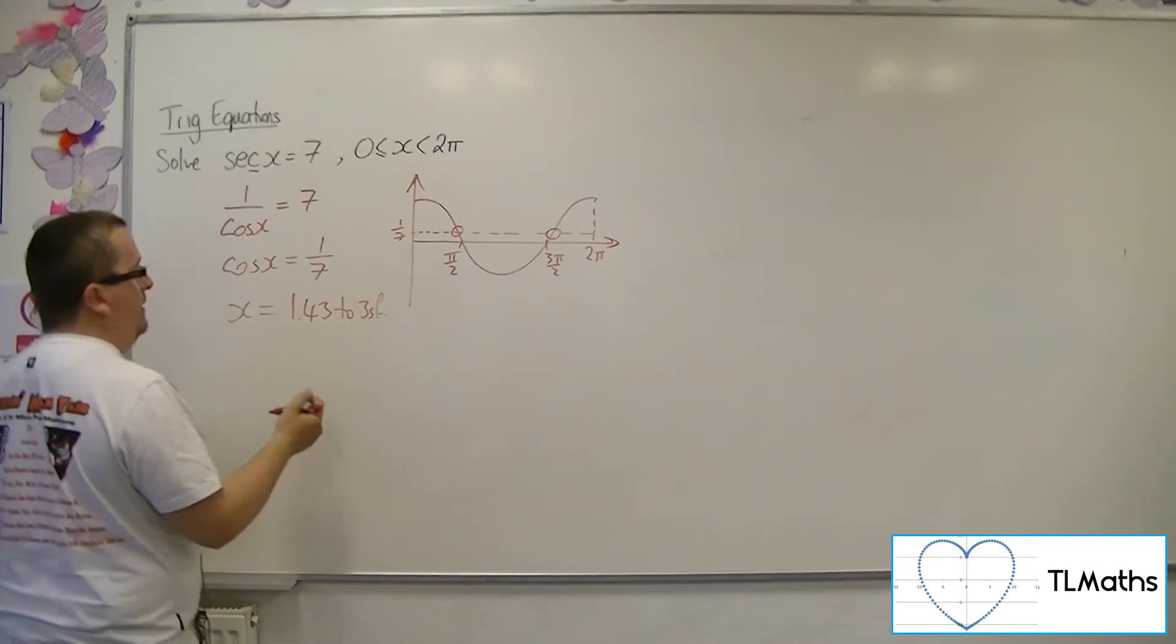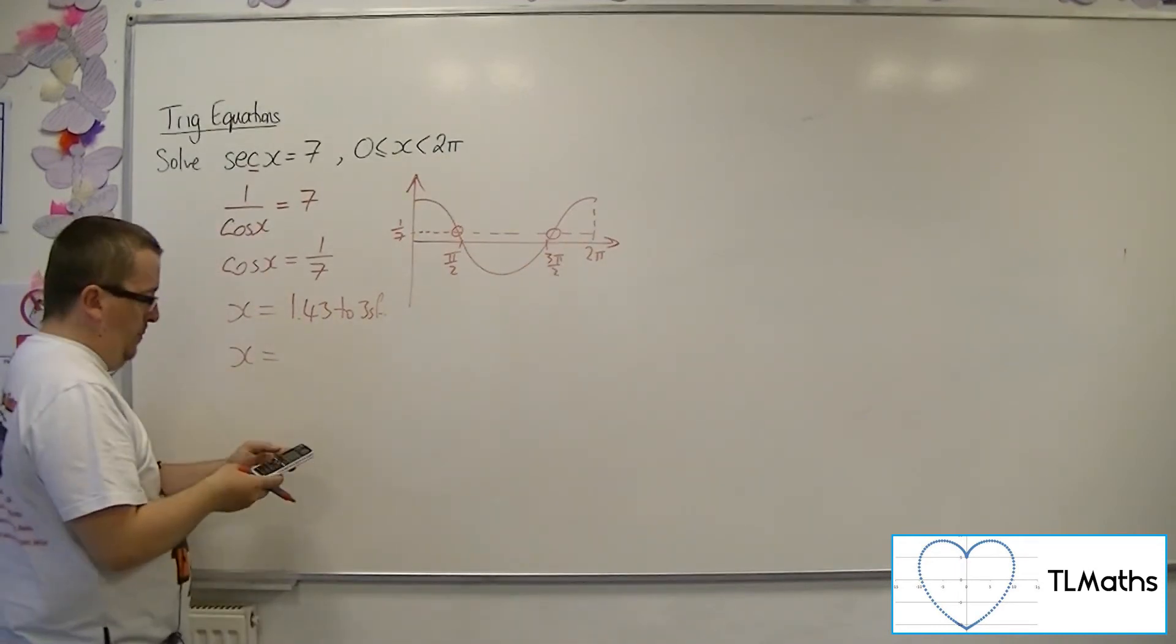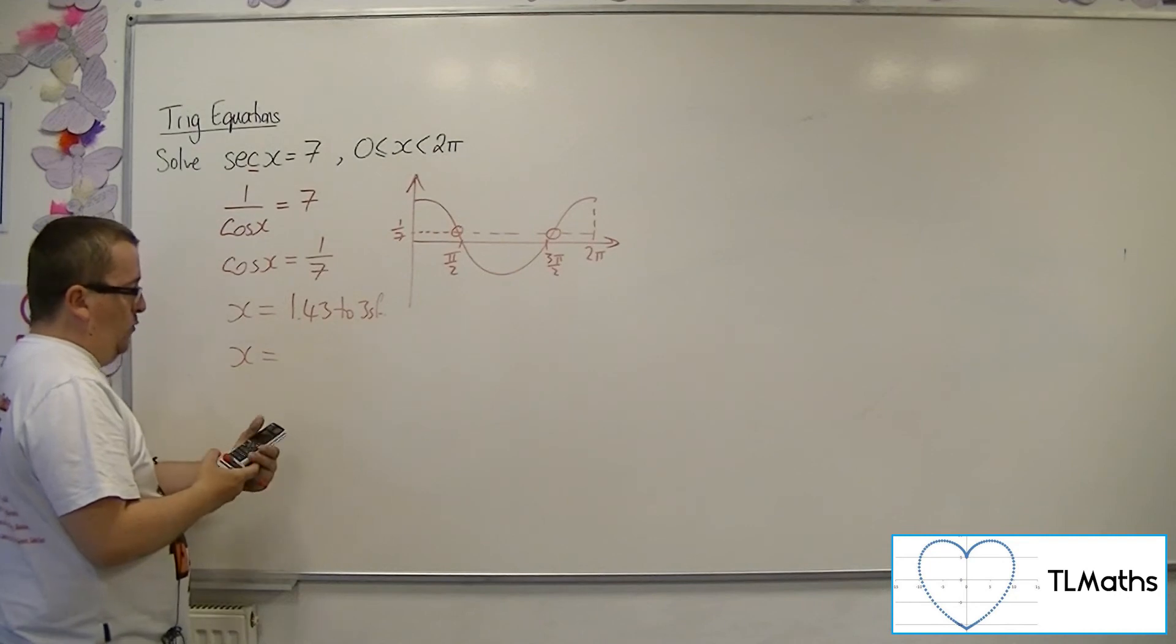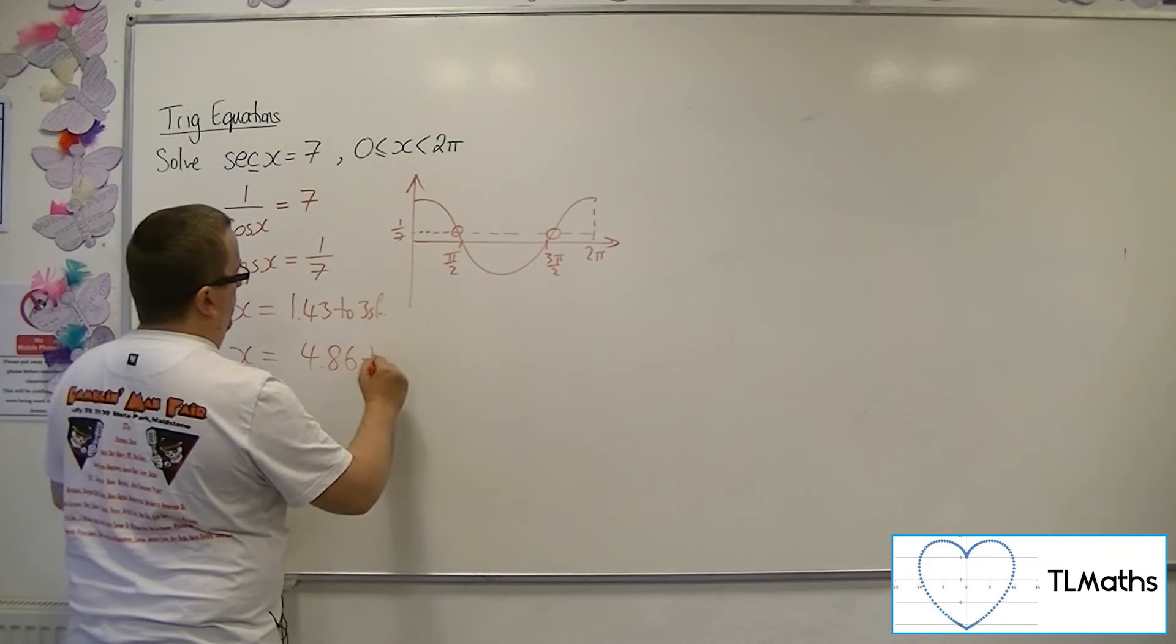That's the first solution there. And the second solution is 1.43 away from 2π. So 2π take away your answer, it's 4.86 to three significant figures.